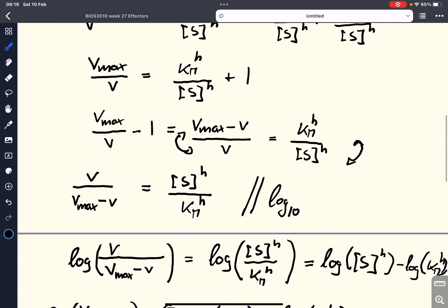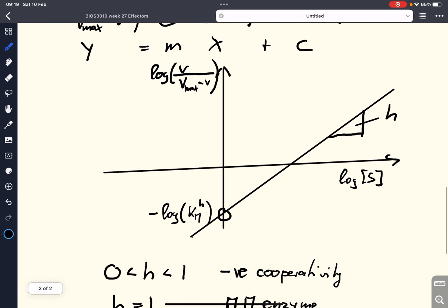So, this was how we can derive this equation for the Hill plot. So, this is the Hill plot, which allows us to find the cooperativity, the Hill coefficient, for an enzyme that shows cooperativity. I hope this makes sense and thank you very much for watching.